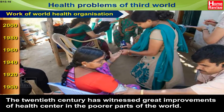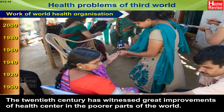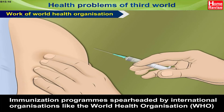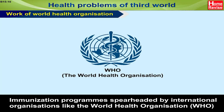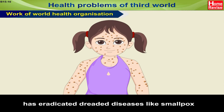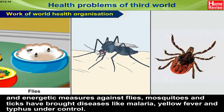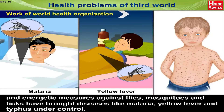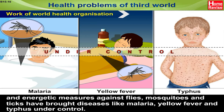Health problems of the Third World and the work of the World Health Organization: the 20th century has witnessed great improvements in health in the poorer parts of the world. Immunization programs spearheaded by international organizations like the WHO have eradicated dreaded diseases like smallpox, and energetic measures against flies, mosquitoes and ticks have brought diseases like malaria, yellow fever and typhus under control.